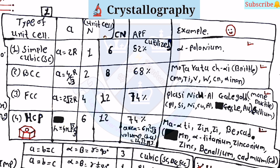For the BCC (body-centered cubic): A is equal to 4 divided by root 3, times R. The unit cell count is 2, CN is equal to 8, and APF is equal to 68%. The examples include molybdenum, titanium, uranium, tungsten, chromium, and alpha iron.